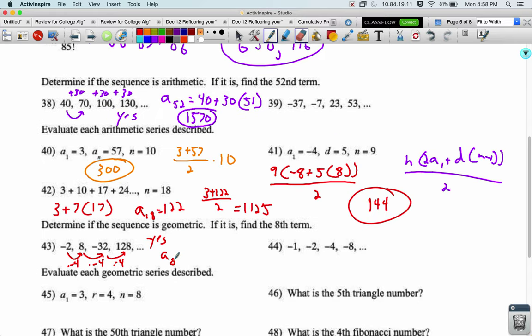We can use this formula to get the nth term. a sub 8 equals our first term negative 2 times our common ratio negative 4 raised to the power of 7. Again, it's always 1 less because you only do it 7 times to get to the 8th term.